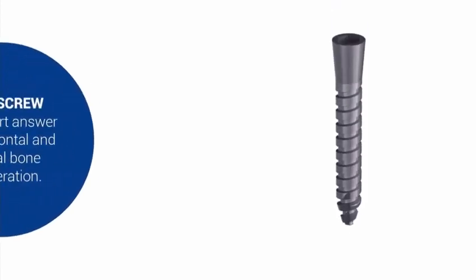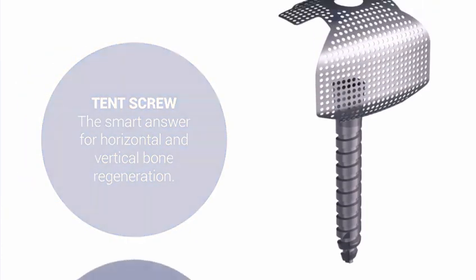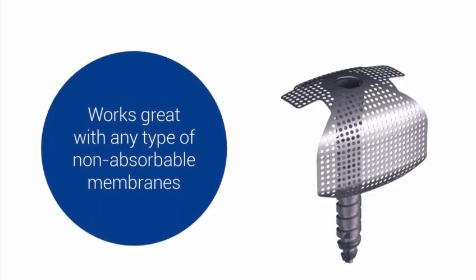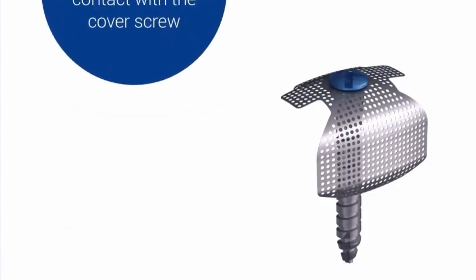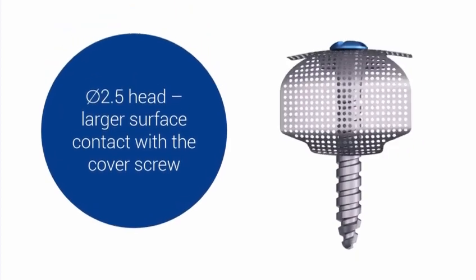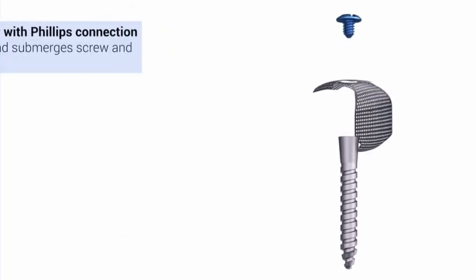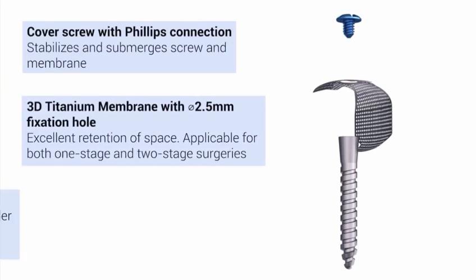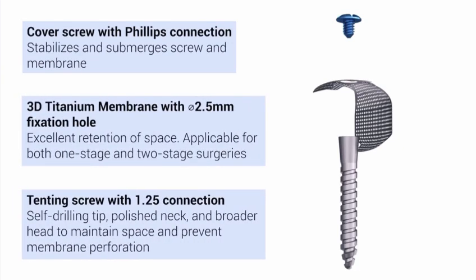The DSI-2 Component Tenting Screw provides a reliable solution for membrane fixation of any type. Even first-time users can expect predictable bone regeneration using it with titanium mesh. Its 2.5mm diameter head provides a broad surface area to help prevent membrane perforation or tearing, and its aggressive tip and thread design engages bone for precise placement without pre-drilling, even in cortical bone.